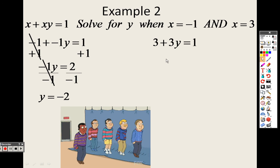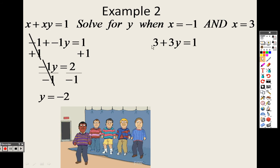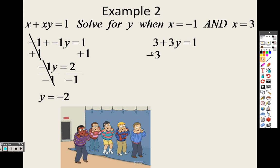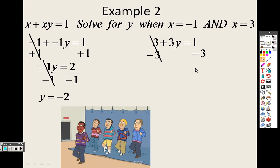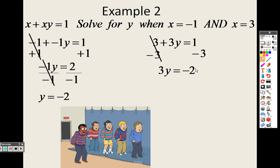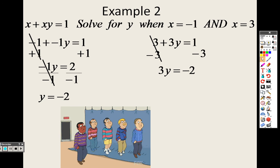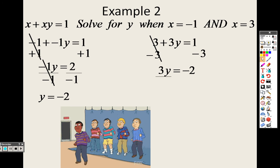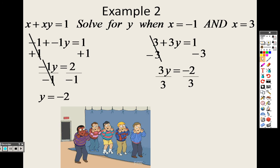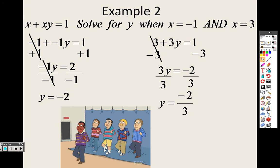Over on this side, I want to get the y by itself. So since it's a positive 3, I would subtract 3 on both sides. So I get 3y equals negative 2. So 3 times y, the opposite of multiplication is division. So divide both sides by 3, and I get y equals negative 2 thirds.